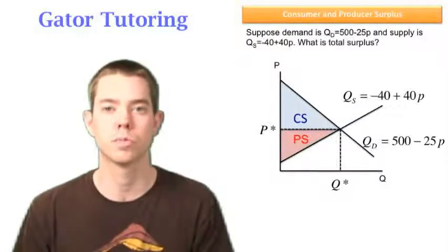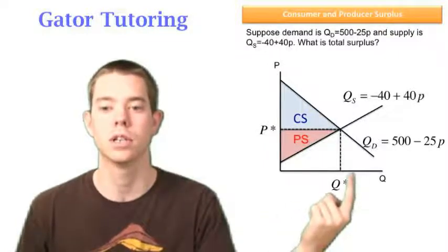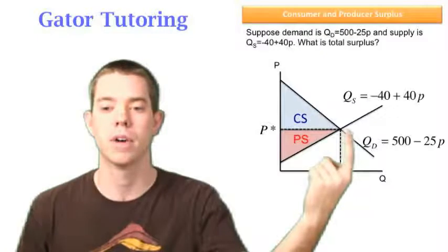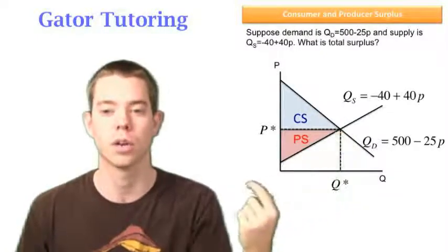We see that we don't produce past Q star, because if we produce past Q star, say this unit, well then it costs way up here, and we actually get only price for it.